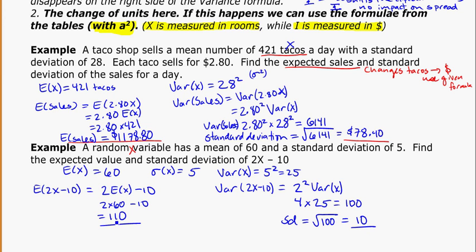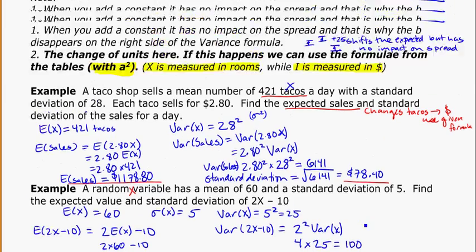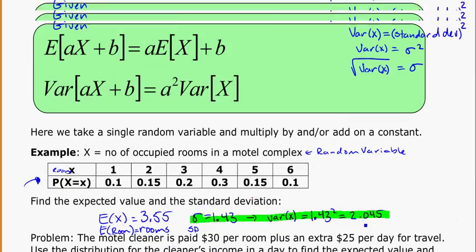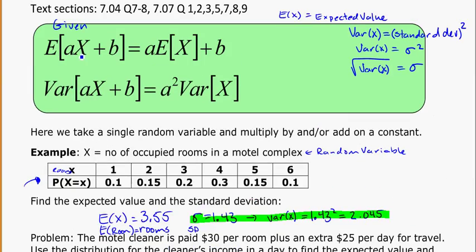So the expected value is 110, and the standard deviation is 10. There's lots of problems to do with these. Key things to remember is just identify what your random variable is, anything that you're multiplying it by, and then anything that you're adding or not. And if that plus term isn't there, you can just ignore it.